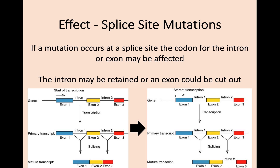The last type is called a splice site mutation. Any mutation that occurs at a splice site — which you'll hopefully remember from previous key areas — can affect the coding for introns or exons. Remember, exons are expressed and introns are cut away. If the mutation occurs at a splice site, it can have a massive impact on the protein in general, because if an intron is retained or an exon is cut out, that's a totally different stage of transcription happening and a different protein will be produced.